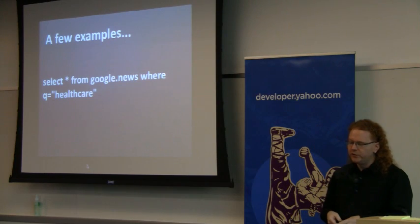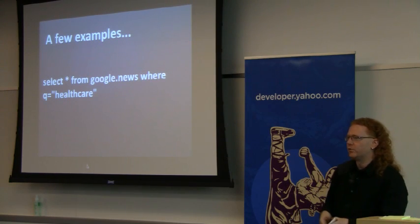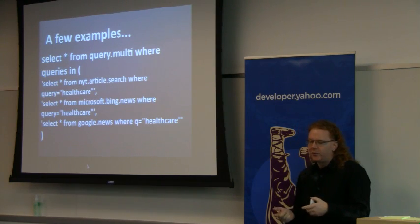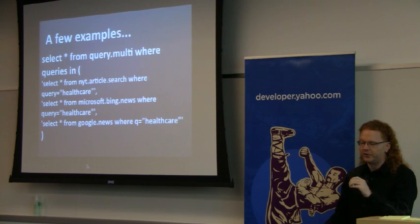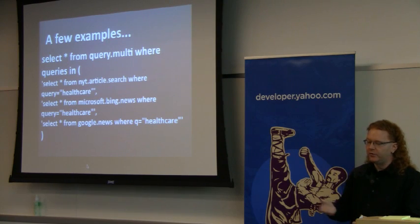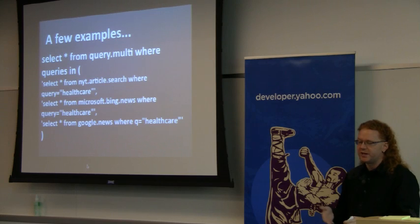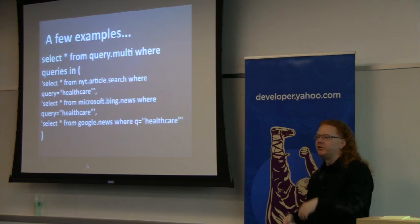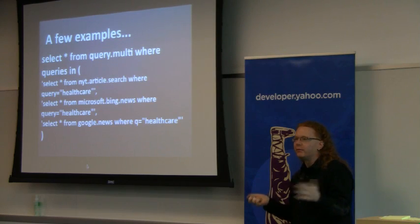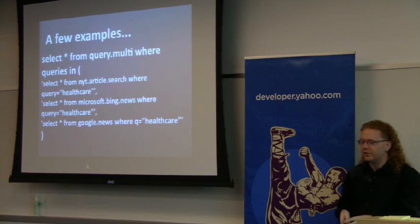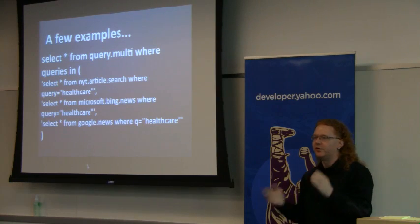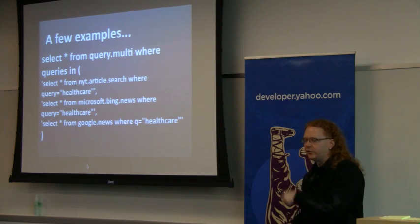SELECT * FROM craigslist.search WHERE location='sfbay', type='sss', query='flower pot' — in case you want a flower pot, you can find it with one line of code. SELECT * FROM google.news WHERE query='health care' — what's happening on Google News right now about health care? Or you can compare things using query.multi, where you list several queries running one after another: select from New York Times article search, Microsoft Bing News, and Google News all for 'health care', get it all back as one interface. This is basically how I built Guhooby — great for comparing different sources.